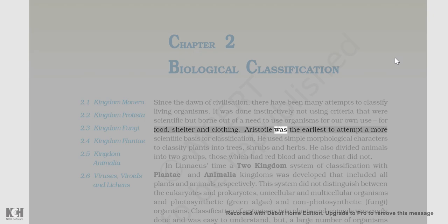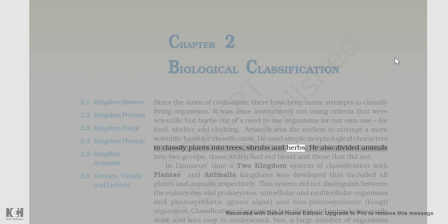Aristotle was the earliest to attempt a more scientific basis for classification. He used simple morphological characters to classify plants into trees, shrubs, and herbs. He also divided animals into two groups: those which had red blood and those that did not.